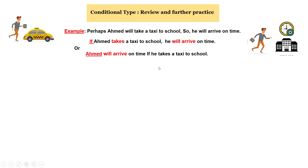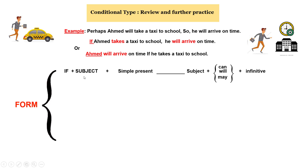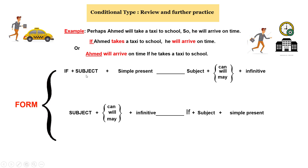Let's have a look at the form. For the form, as you can see, we have: if plus subject plus verb in simple present. Then we have subject and will plus infinitive. As you can see, we can also have other modal possibilities like 'can' and 'may.' It is also grammatically correct to reverse this order and have: subject plus will or other modals plus infinitive, then the if clause plus subject plus simple present.